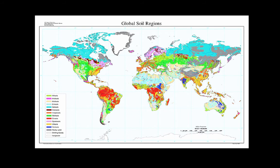On a more global basis, we can see that through Eastern Europe and the northern Asian continents there are a lot of Alfisols. Down in our rainforest regions, you can see a lot of Oxisols. These are pretty fertile soils — rainforested areas get a lot of precipitation, a lot of things grow there, and therefore a lot of things are returned to the soil in terms of organic matter.